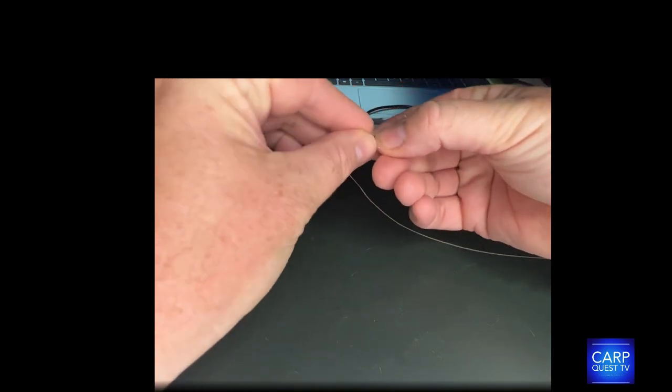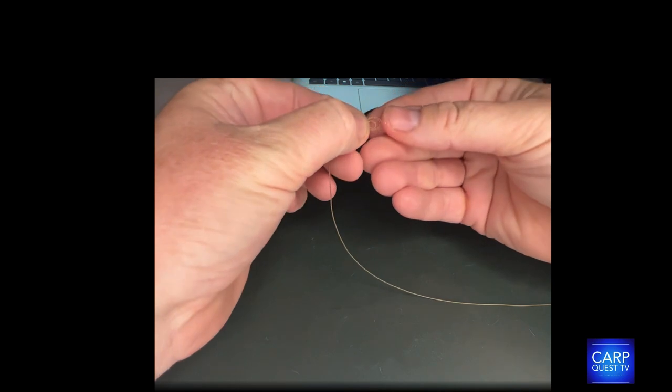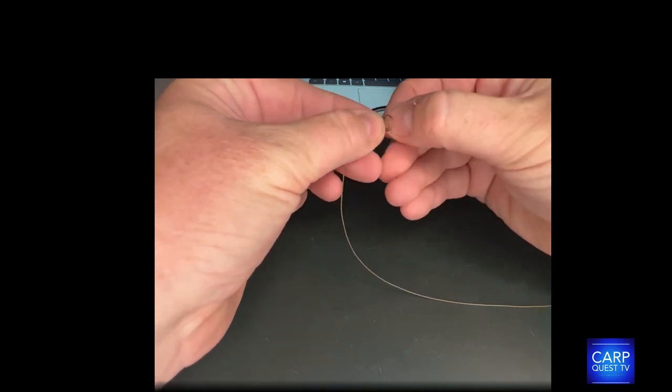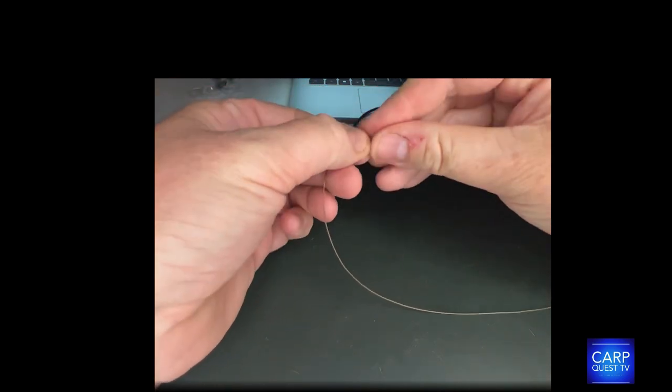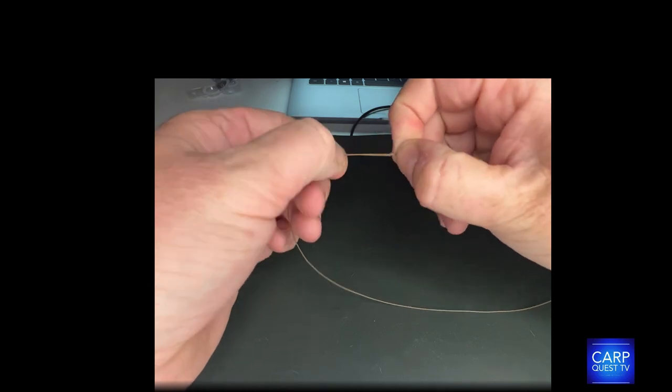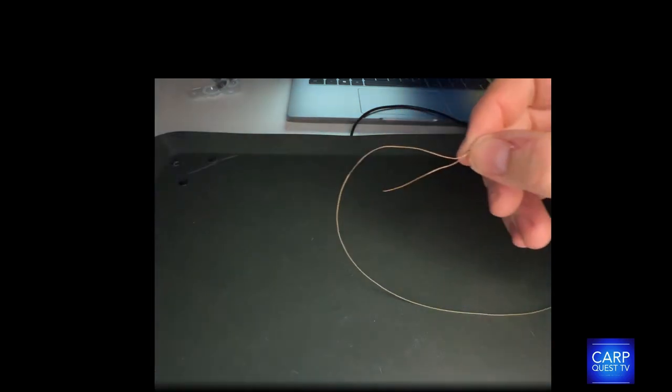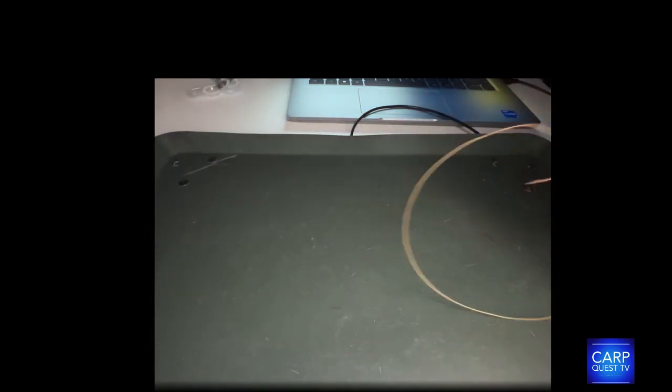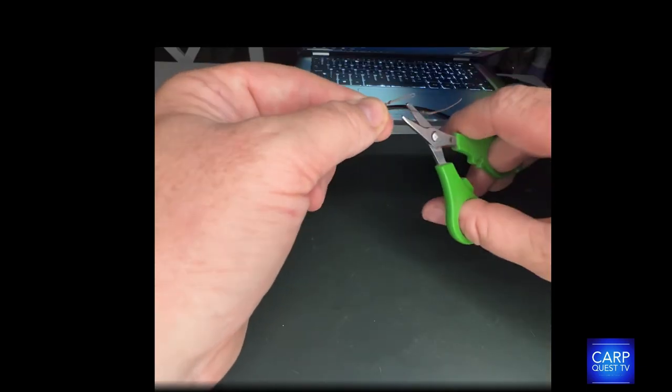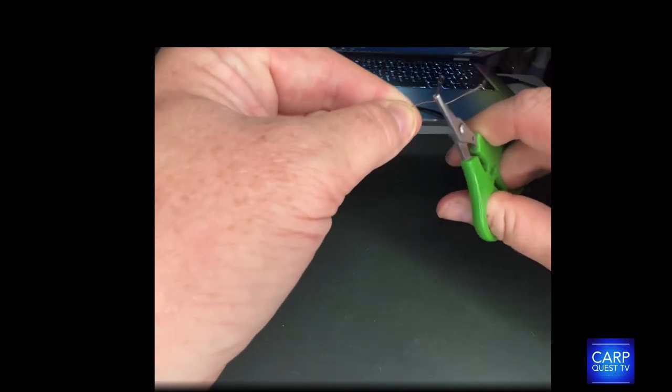I really love this rig just because of its reliability—it's absolutely bombproof. What we're doing here is tying a small overhand loop, and this will be for the bait to go onto. The bait will be secured in place with a baiting stop. Make it fairly small and then trim off the excess tag and then blob it.